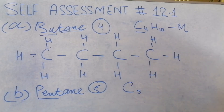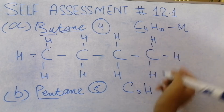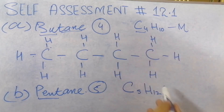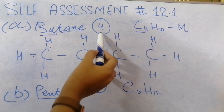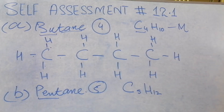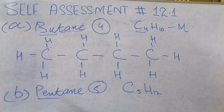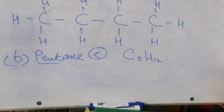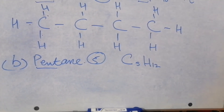So C has 5 carbon atoms. For H, it's simple — just add 2 more than butane's hydrogen count, which gives 12. So the molecular formula of pentane is C5H12. The hint is: for each carbon atom you add, you add 2 more hydrogen atoms.